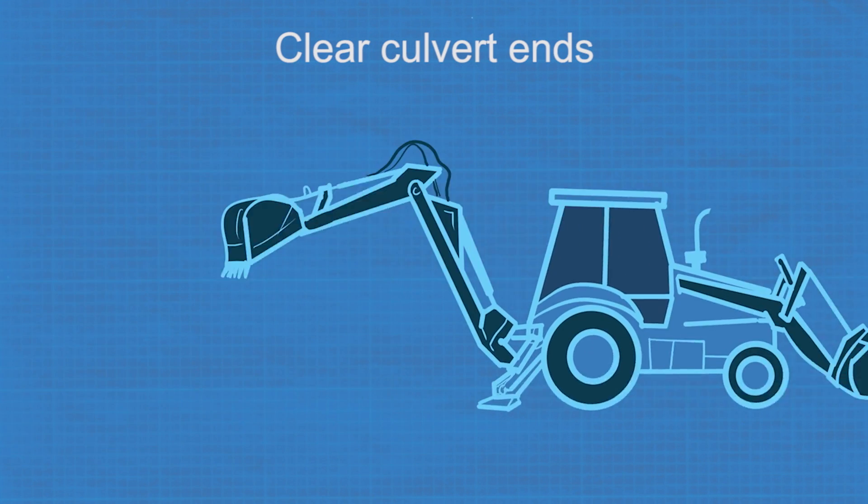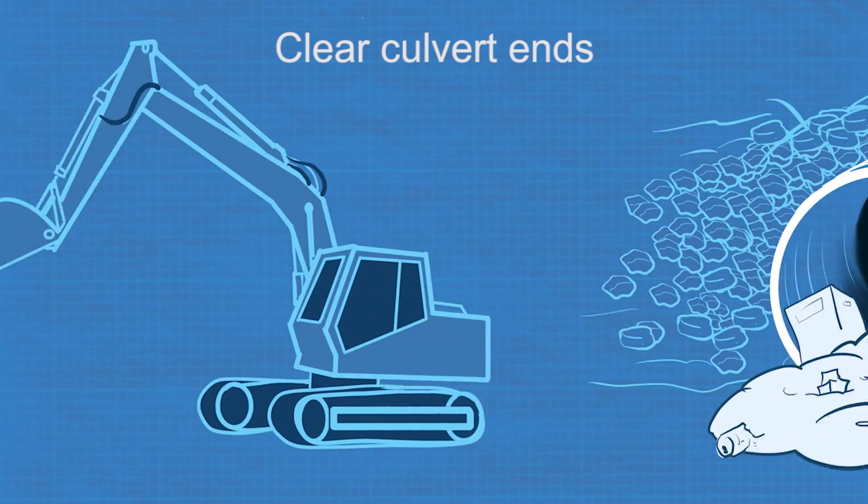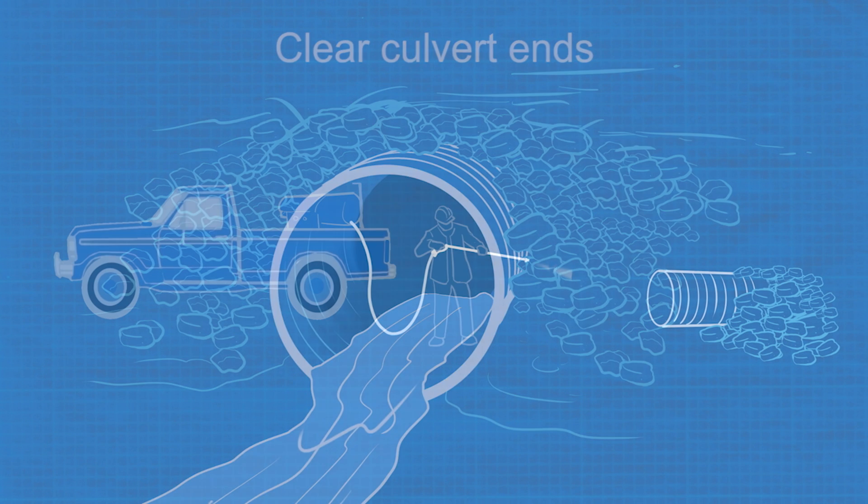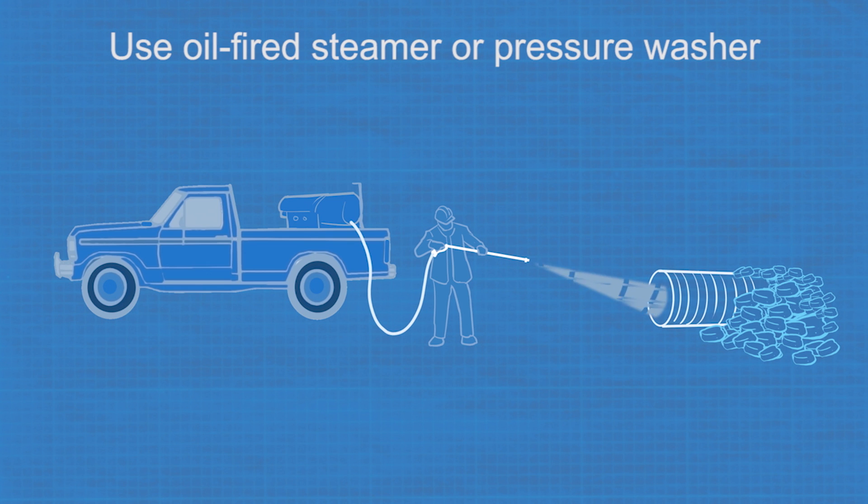Do it by hand, with a vacco, or an excavator. Clear any blocked culverts so water can flow freely. You can use an oil-fired steamer or a hot pressure washer to melt frozen blockage from the downstream end of the culvert.